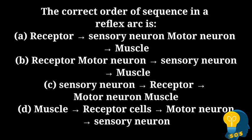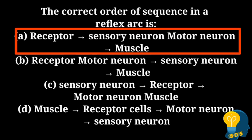The next question is: the correct order of sequence in a reflex arc is? Option A: receptor → sensory neuron → motor neuron → muscle. Option B: receptor → motor neuron → sensory neuron → muscle. Option C: sensory neuron → receptor → motor neuron → muscle. Option D: muscle → receptor → motor neuron → sensory neuron. The correct answer is option A. From the receptor, the impulse passes through the sensory neuron, then through the motor neuron, and is received by the muscle.